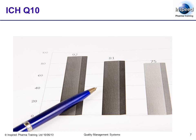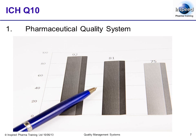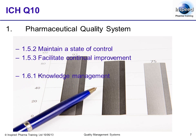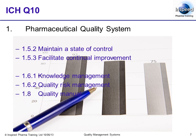In the first section of ICH Q10, something of a preamble, Section 1: Pharmaceutical Quality System, it straight away points to the need to maintain a state of control and to facilitate continual improvement. This shows that pharmaceutical manufacturers must be in control — very much the spirit of GMP — but almost straight away states that this is not enough, with the following clause on continual improvement. It also talks of knowledge management, quality risk management, and the need for a quality manual — a high-level document that describes the QMS.